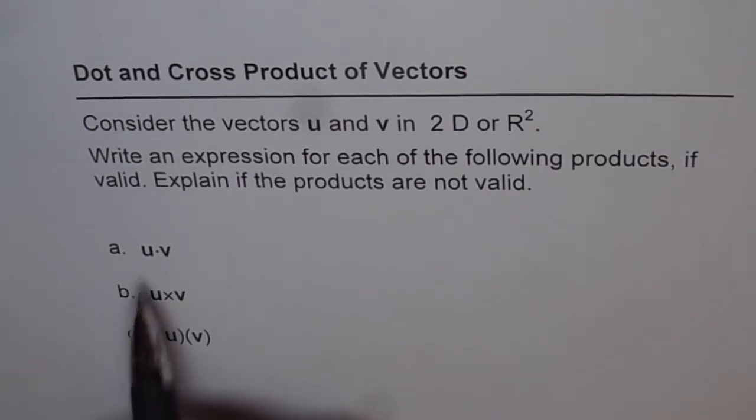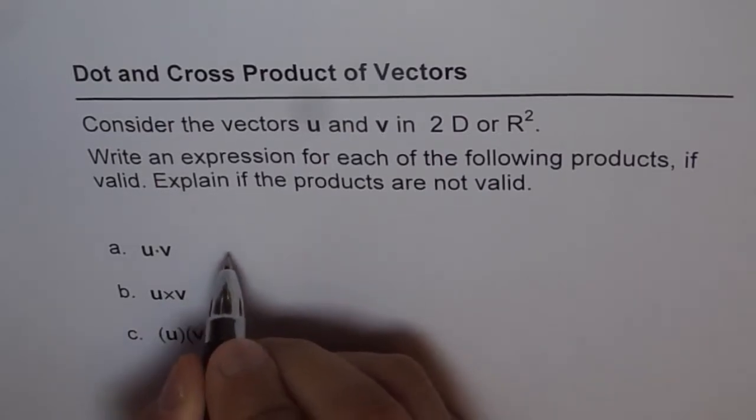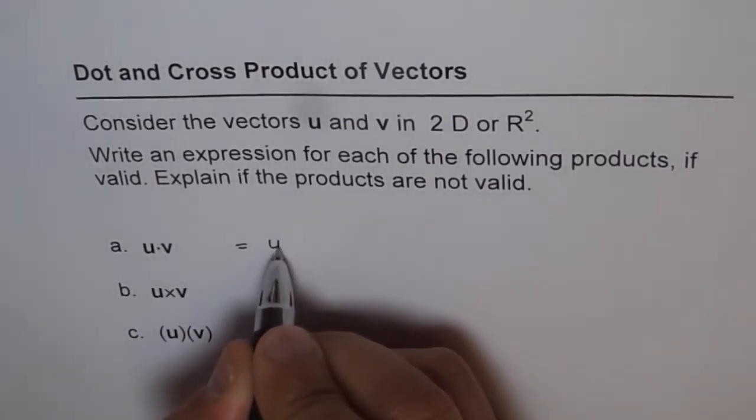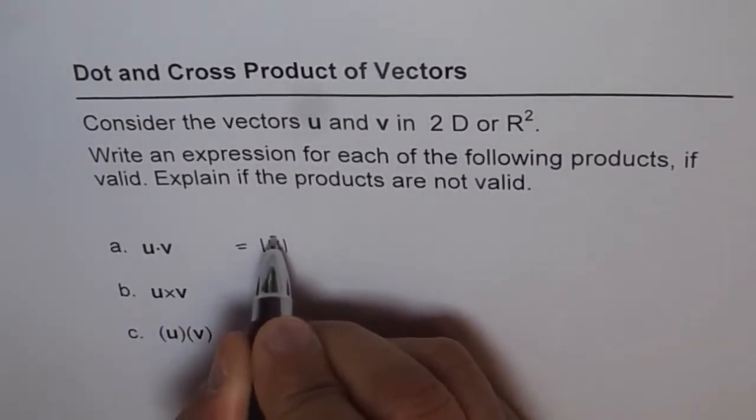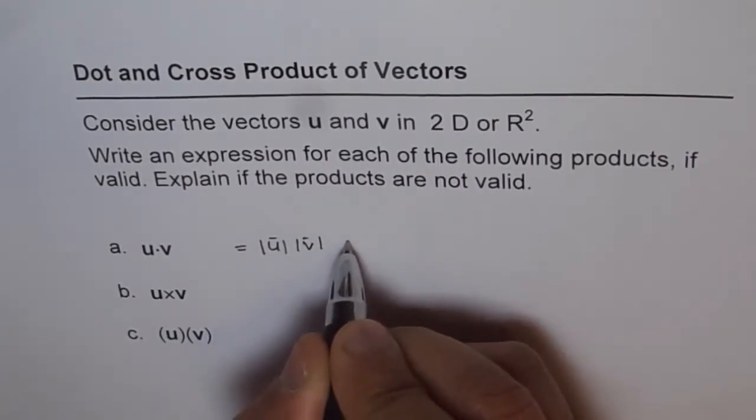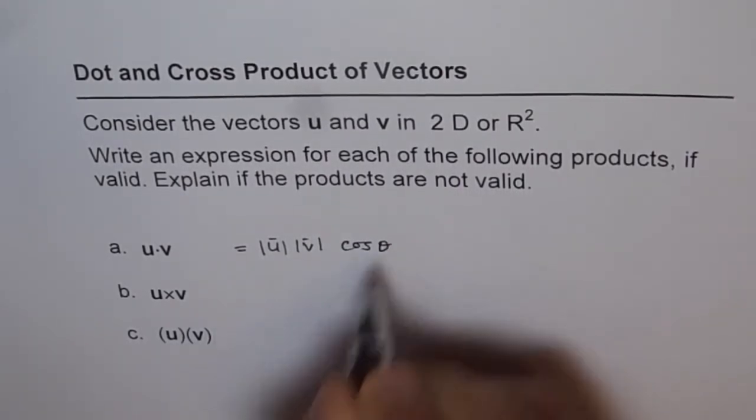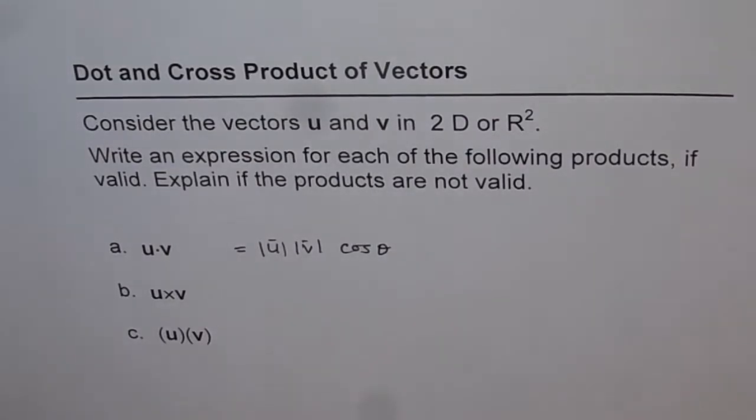Now my suggestions are: u dot v. In R², u dot v is very well defined. u dot v is magnitude of u times magnitude of vector v times cosine of angle between them. If the angle is theta, it's |u||v|cos θ.